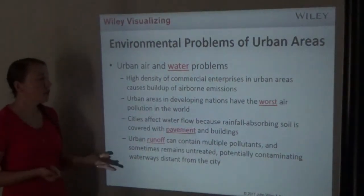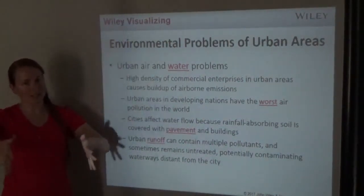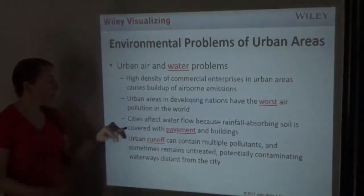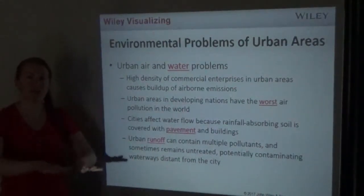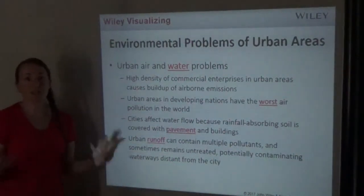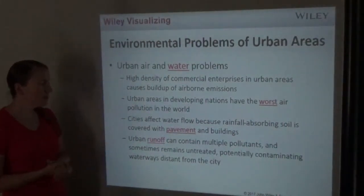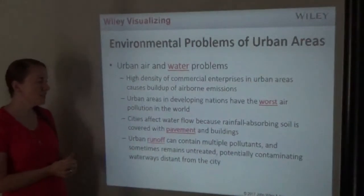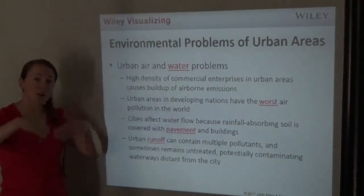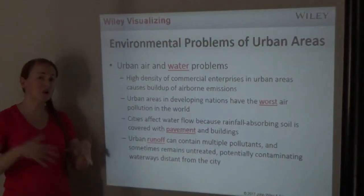Cities affect water flow because rainfall-absorbing soil is covered with pavement and buildings. In a forest, rain is absorbed into the ground and plants; in a city, it all runs down drains, picking up pollutants along the way. There can be more flooding because nothing absorbs the water. Urban runoff can contain multiple pollutants and sometimes remains untreated, potentially contaminating waterways far from the cities.